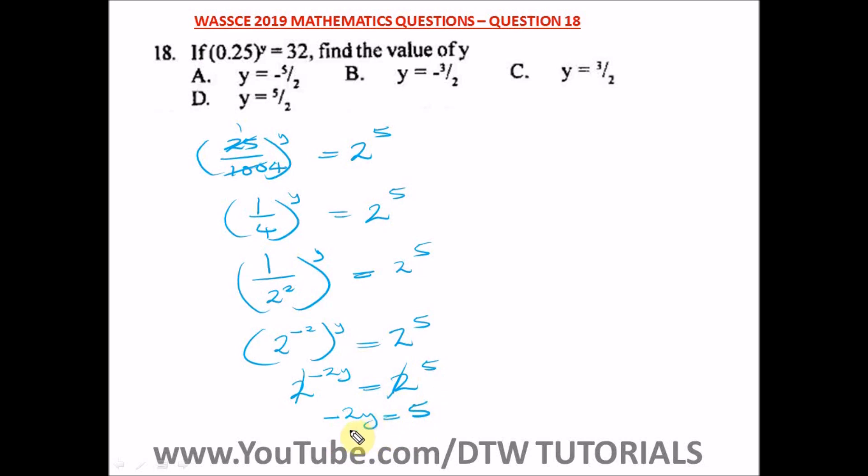Divide both sides by minus 2. Minus 2 cancels out, and we are left with y is equal to minus 5 over 2.